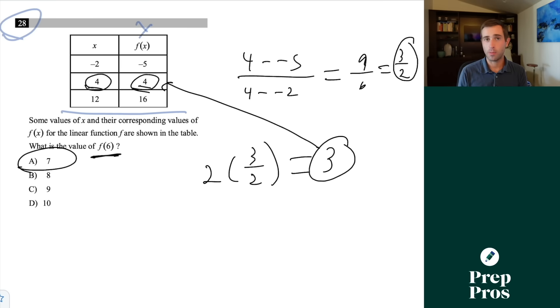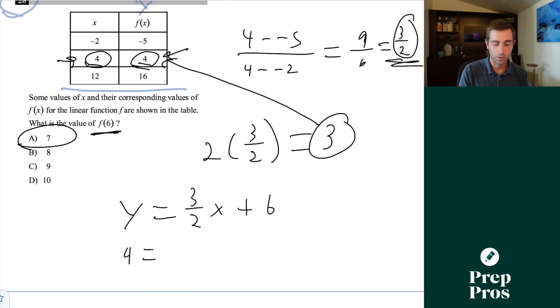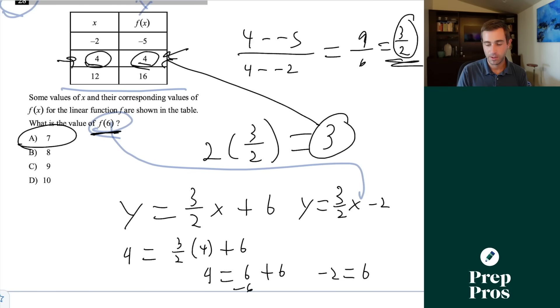If that didn't make sense, here's a rinse and repeat method you can use for all line questions. Once we know the slope, which we solved for, we can do y equals 3 halves x plus b. We just need to solve for the y-intercept and then we know the entire equation. We can plug in any pair of points. Here we'll plug in 4 comma 4. We do 4 equals 3 halves times 4 plus b. This gives us 4 equals 6 plus b. Once we subtract over the 6, we get negative 2 equals b. This means our entire equation is y equals 3 halves x minus 2. If you want to solve for f of 6, you simply plug in 6 for x and you'll find your exact same answer of 7.